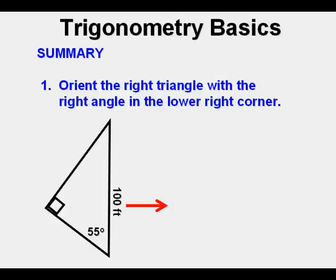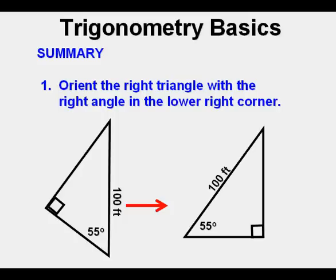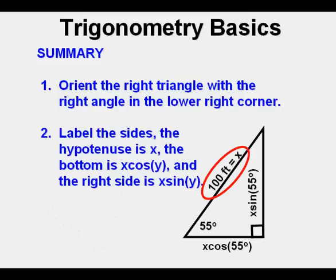In summary, take a right triangle and reorient it with the right angle in the lower right corner. For this triangle we had to rotate it and flip or reflect it. Second, label the sides of the triangle. The hypotenuse is X. The bottom is X cosine angle Y. In this case 55 degrees. And the right side is X sine angle Y. In this case 55 degrees.